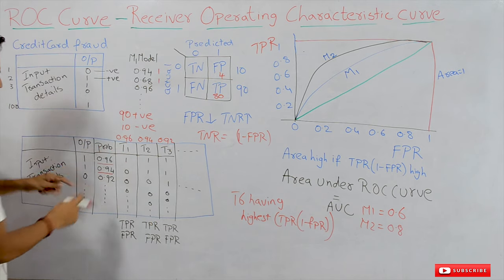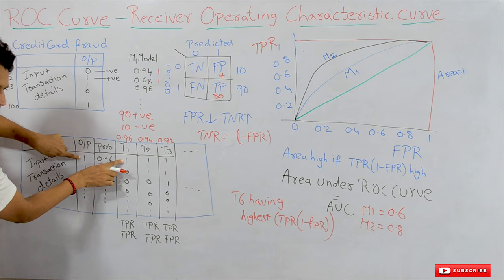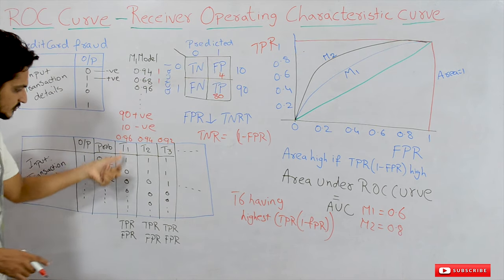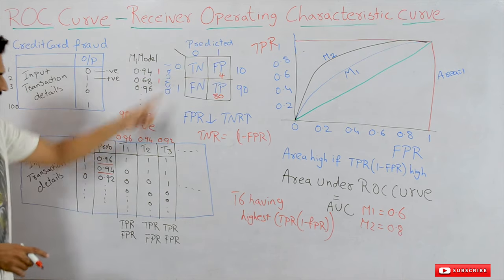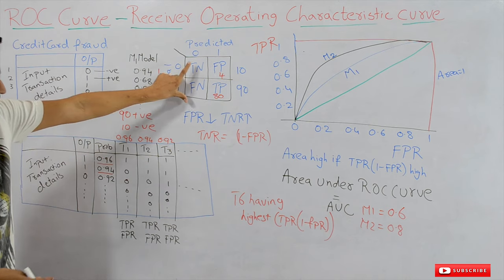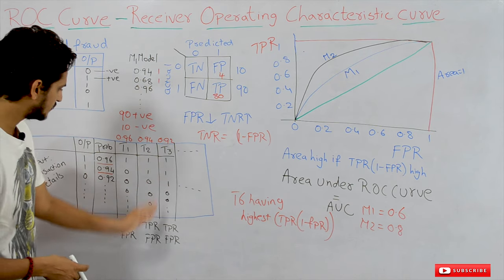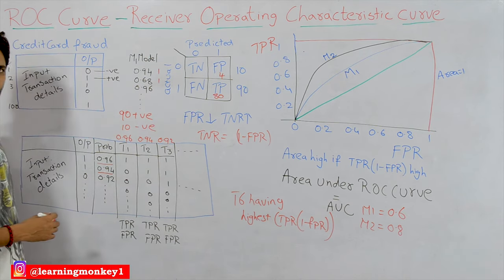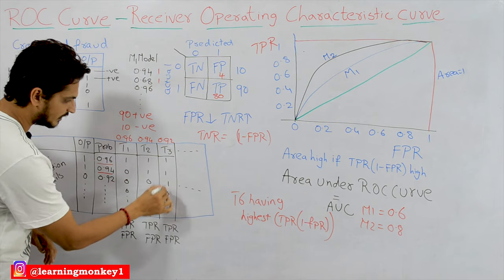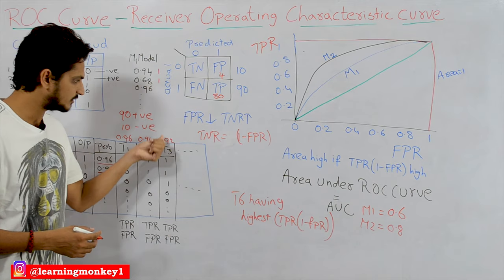At T1 we have actual values and predicted values. If we have actual and predicted values, we can plot the confusion matrix. So plot the confusion matrix for T1, then calculate true positive rate and false positive rate. Same for T2 — plot the confusion matrix and calculate TPR and FPR. Next, take the third probability as a threshold value, where equal to and above this is considered as positive points (1, 1, 1) and remaining as negative points. Calculate TPR and FPR for this threshold value.